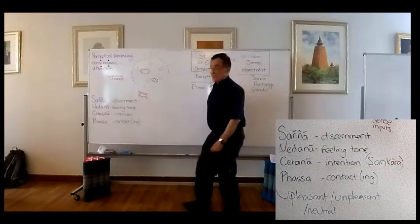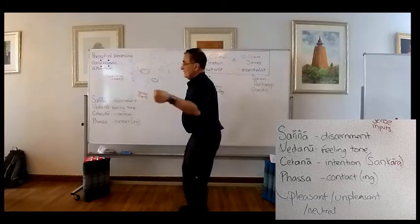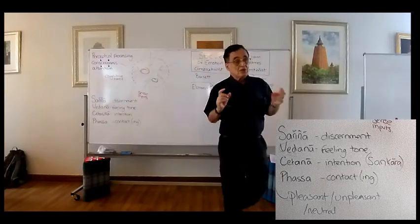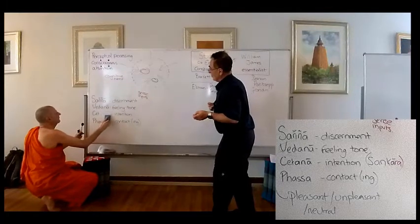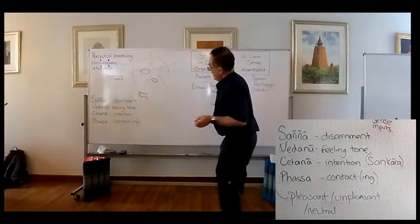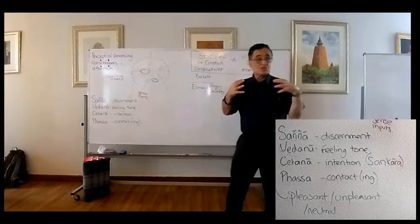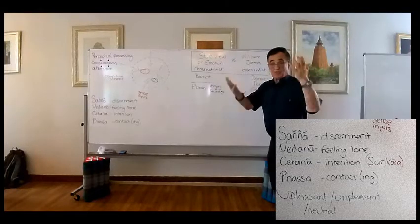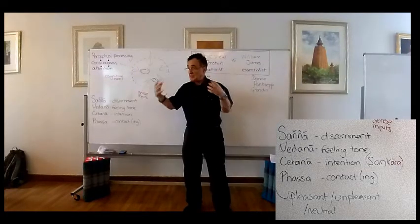It starts with the idea of contact — in the sutta it often says 'in dependence on contact arise feeling, vedana, sanya, and so on.' For me, contact — passa — is somewhere around when objects start to enter consciousness. That object can come from the senses, or it can be a mental object; there are many sources from which objects come into consciousness. I also emphasize what I call proprioceptive awareness, which is a great example of phenomenal consciousness — the consciousness we have of our entire body.